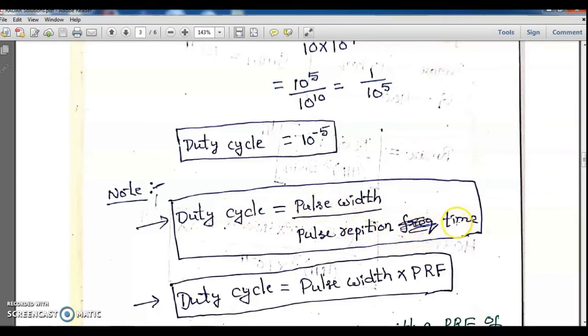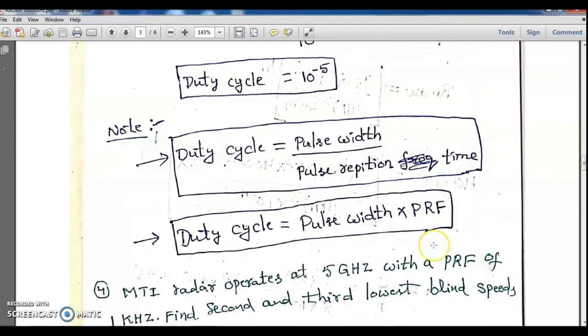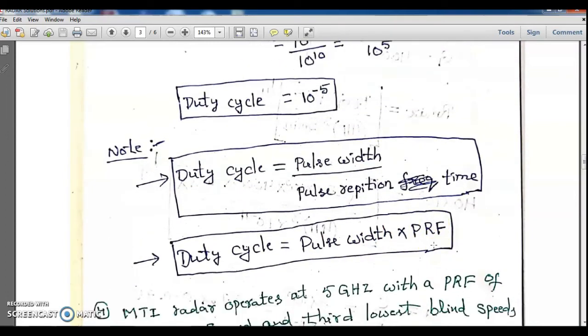Note: When pulse width and pulse repetition time are given, duty cycle equals pulse width divided by pulse repetition time. When PRF is given, duty cycle equals pulse width times pulse repetition frequency.